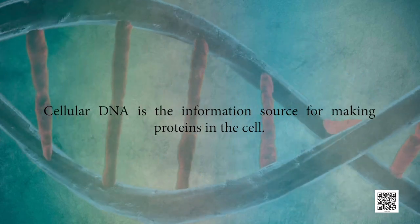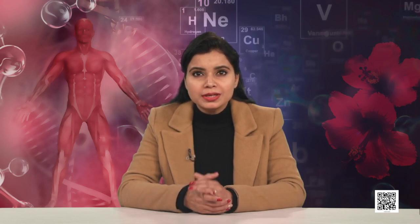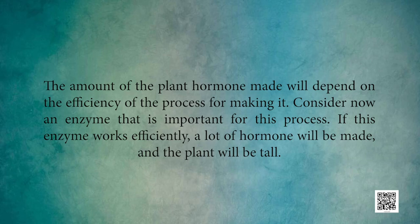How does the mechanism of heredity work? Cellular DNA is the information source for making proteins in the cell. A section of DNA that provides information for one protein is called a gene. For example, plant height depends on the amount of a particular plant hormone. The amount of hormone produced depends on the efficiency of the enzyme that makes it. If the enzyme works efficiently, a lot of hormone is made and the plant will be tall. If the gene for the enzyme has an alteration that makes the enzyme less efficient, less hormone is made and the plant will be short. Thus, genes control characteristics or traits.